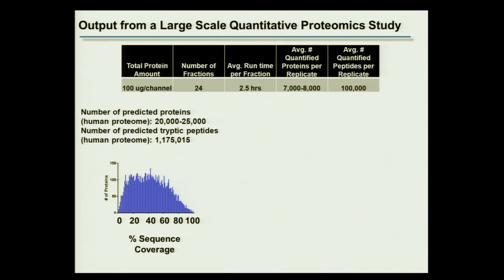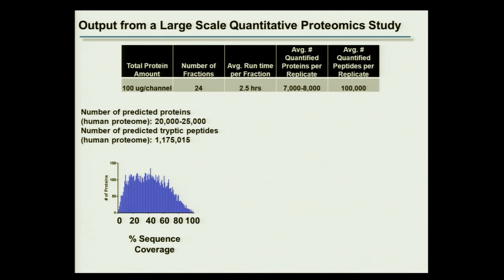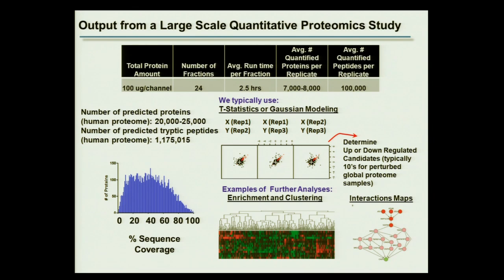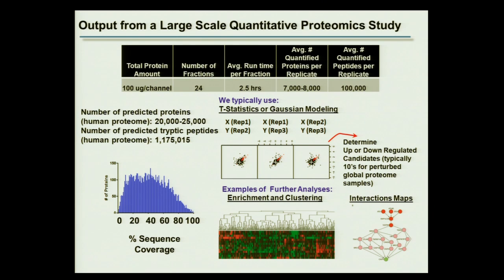For those used to genome profiling experiments with near 100% sequence coverage, proteomics achieves on average about 40% sequence coverage across 8,000 proteins — which is quite good but still has room for improvement. From all this data, we typically use T-statistics or Gaussian modeling to determine what proteins are up- or down-regulated. Typically, tens of proteins are perturbed in global proteome samples. You can take data further with enrichment and clustering or generate protein interaction maps using dedicated software.